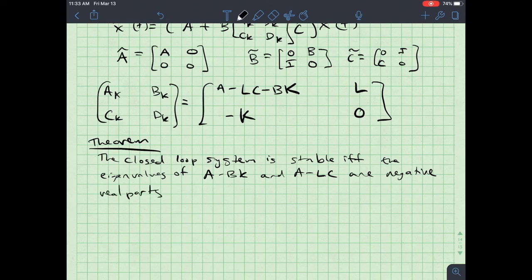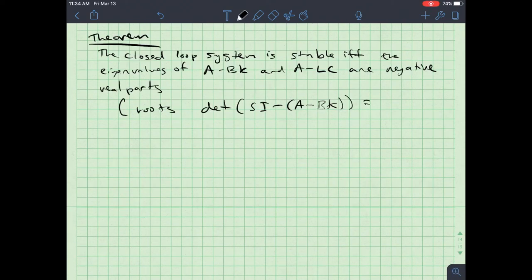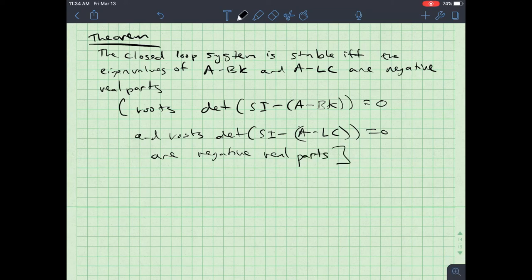In other words, what I could say is that the roots of the determinant of s i minus a minus b k, equals to zero and the roots of the determinant of s i minus a minus l c equal to zero are negative real parts if you don't remember what an eigenvalue is. Now, I'm going to, and by negative real parts, I mean, in the left half complex plane.